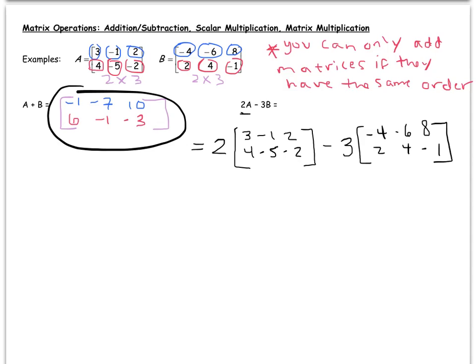And so what I tried to motivate in the last video by using the example of Gap's inventory doubling is that you just simply distribute this 2 to every single element here. So 2A would end up being 6, negative 2, 4, and then 8, negative 10, negative 4. And over here, same thing, we'll distribute that 3.